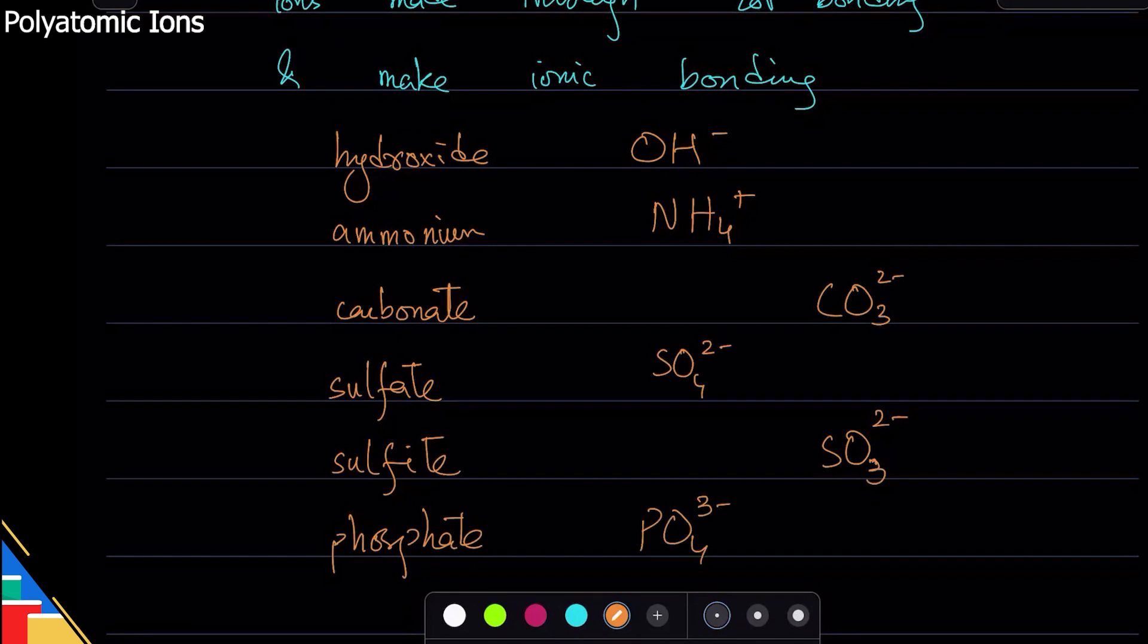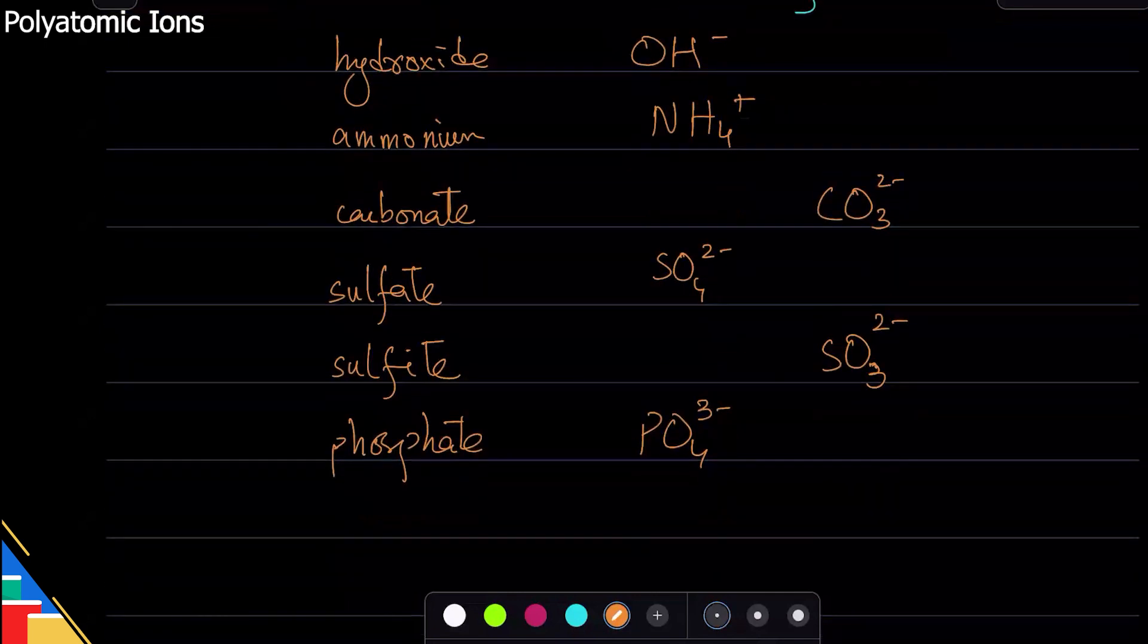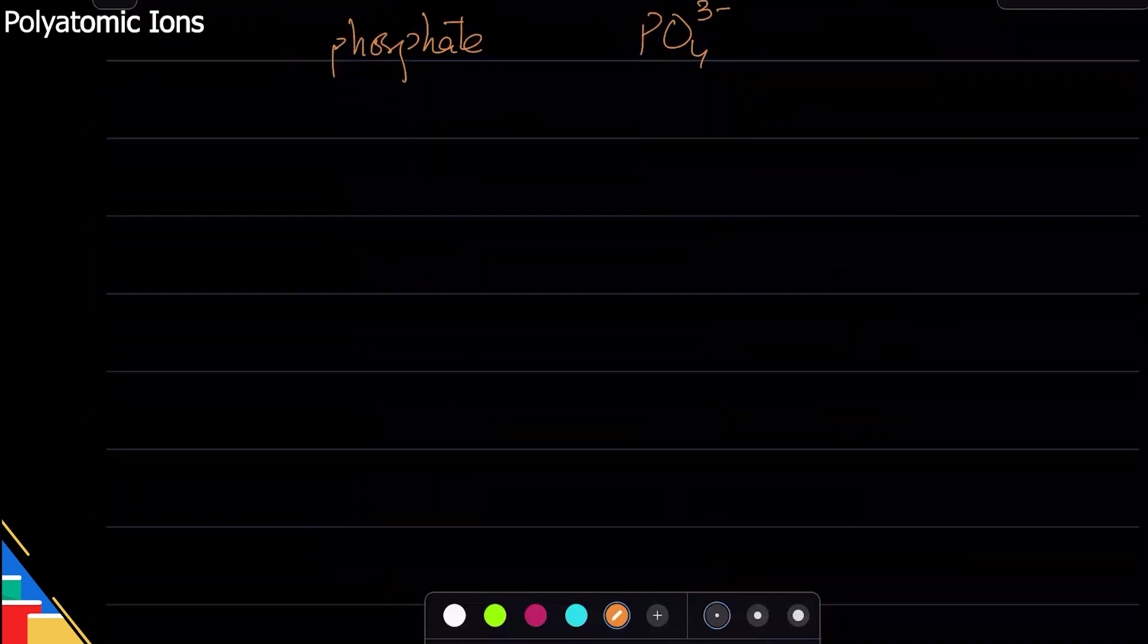These are molecular ions in your syllabus, so you need to remember this. Now how does this work? Naming is still the same, formula is still the same, you can still do ratio flip. There's no different process except that they will get brackets.